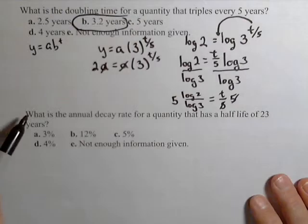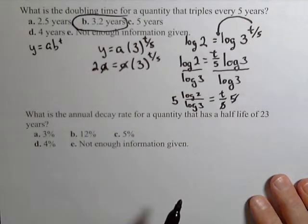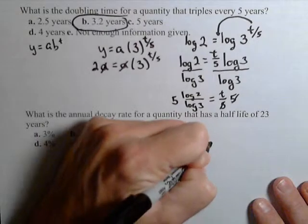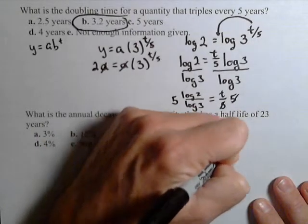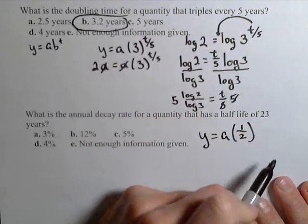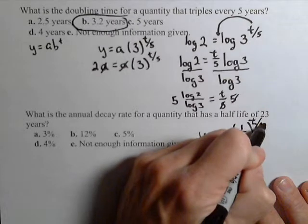In the next problem, we want the annual decay rate for a quantity that has a half-life of 23 years. So now we have decay instead of growth. The model is going to be set up very similarly. I'm going to have y, my initial. Now it's half-life, so what happens with half-life is it's getting cut in half every 23 years. So I raise it to the t over 23.